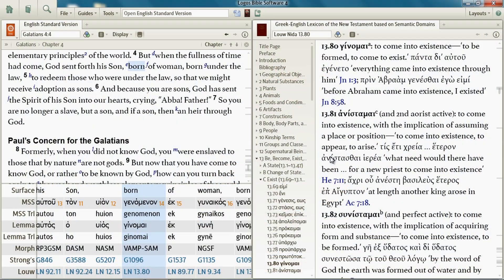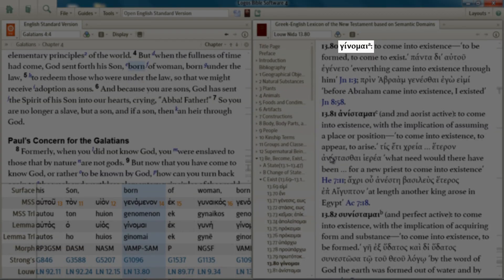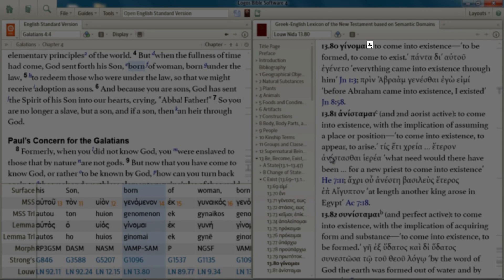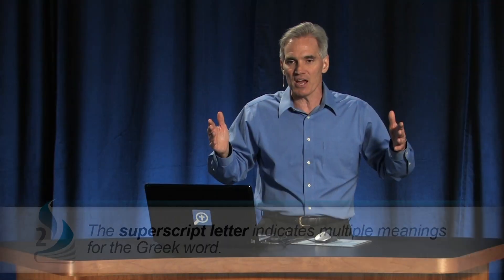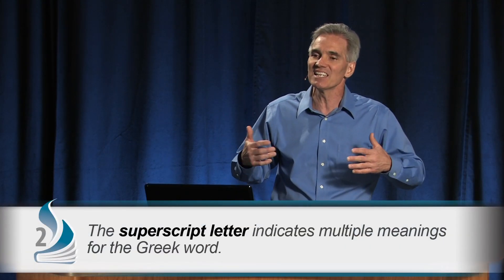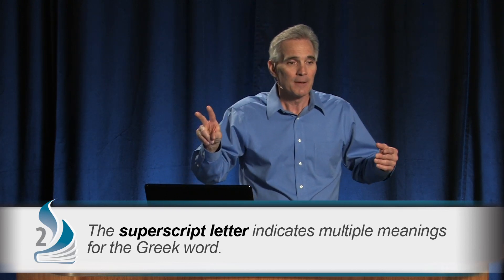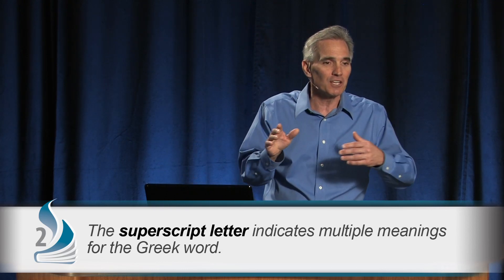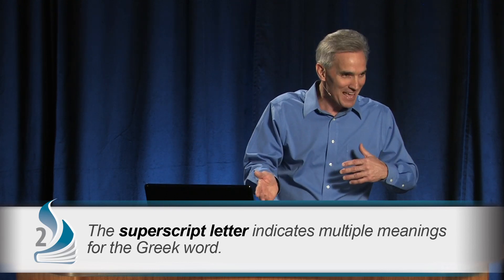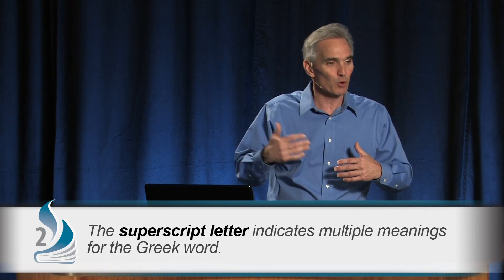Look carefully at the article — it says 'ginomai a.' Notice that superscript letter 'a,' because that tells us ginomai has at least two meanings: if there were no 'b,' there would be no 'a.' If there were a 'd' here, how many meanings could it possibly have? At least four.